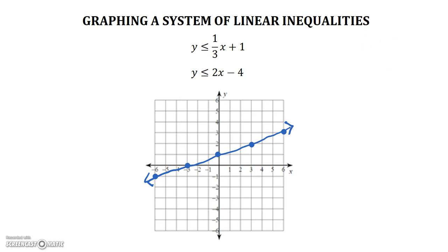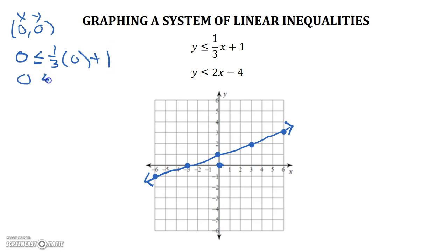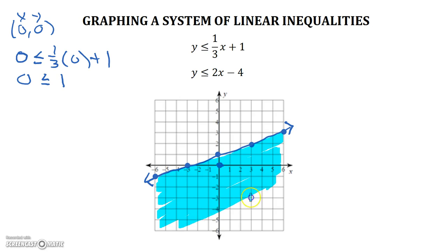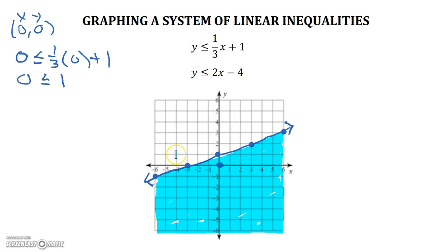And lastly, we have to do the shading step. So using my favorite point, the origin — zero, zero — let's test and figure out where we're going to shade. Since we're working on the first inequality, we're going to plug zero in for x and zero in for y. So we have: zero is less than or equal to one-third times zero plus one. So zero is less than or equal to one. That is a true statement. Therefore, zero, zero is a solution to our inequality. So I'm going to go ahead and shade the region of the graph that includes the zero, zero. Everything that I'm shading are solutions to this first inequality, which means that if I picked any point in the shaded region, it would come out true. If I picked any point outside of the shaded region, it would have given me a false statement.